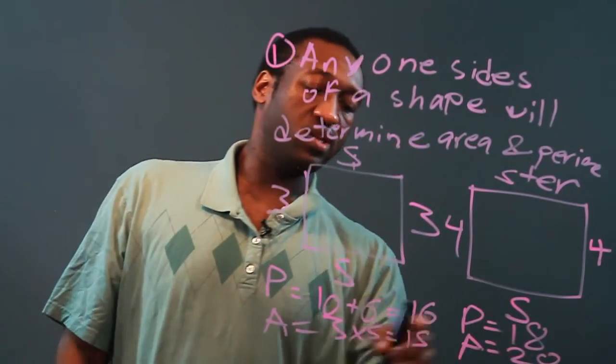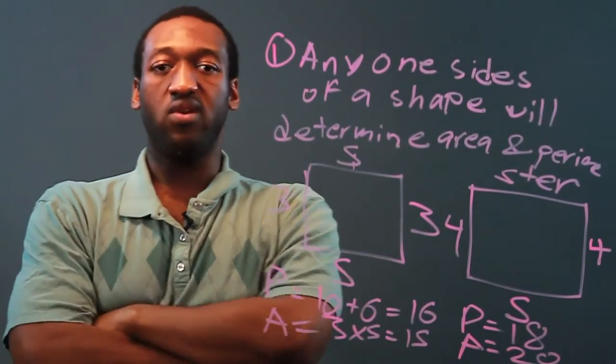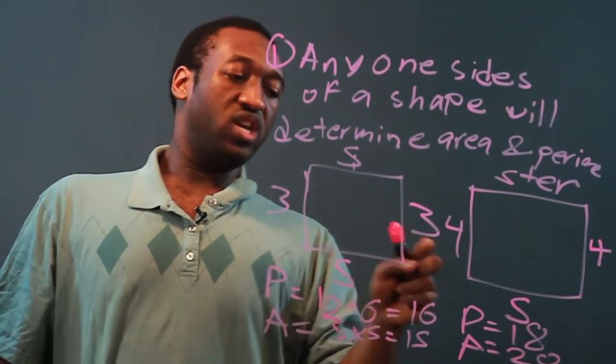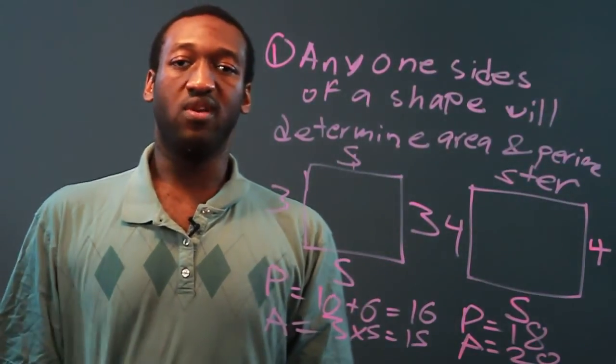And of course the area is in square units as well. So that's the relationship between area and perimeter. A change in any side measure is going to affect both area and perimeter. Thank you for watching.